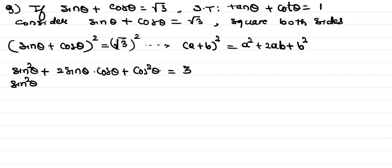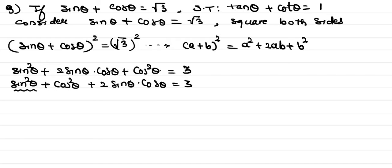Rearranging the terms: sin²θ + cos²θ + 2 sin θ · cos θ = 3. Now we apply the identity sin²θ + cos²θ = 1, so we get 1 + 2 sin θ · cos θ = 3.